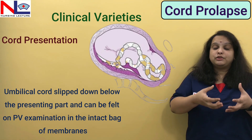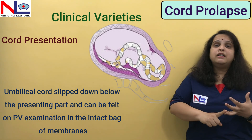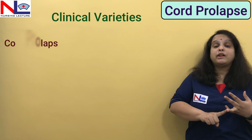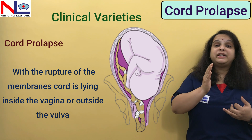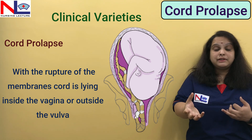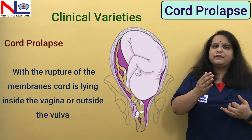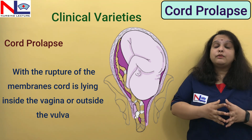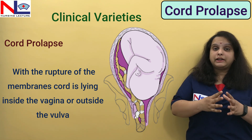In cord presentation, the cord comes first and lies before the presenting part. The third and more critical condition is cord prolapse, where the cord comes out because here the membrane gets ruptured. The cord can be externally visible — it comes out through the vulva — or it may lie within the vagina where we can palpate the cord. Cord prolapse is the most critical of the three varieties.